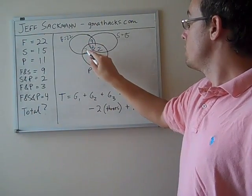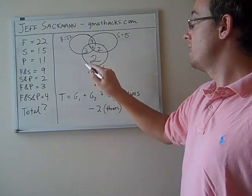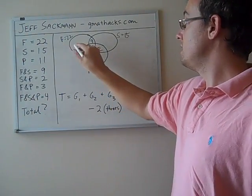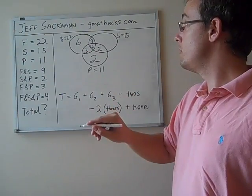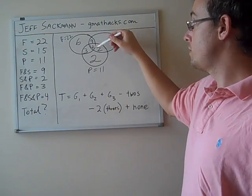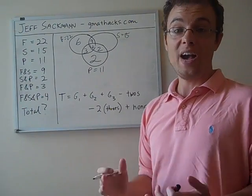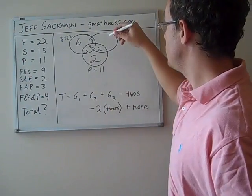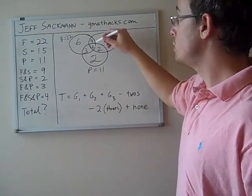Doing the same thing up here, we have 3 plus 4 plus 9, that's 16 people in the overlaps for France. That leaves 6 more who have only been to France. Then over here, Spain, 15, the overlaps get us to 15, so actually nobody has just been to Spain. Anyone who's been to Spain shows up in the overlaps. They've also been to France or to Portugal.